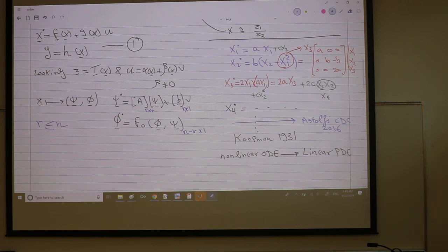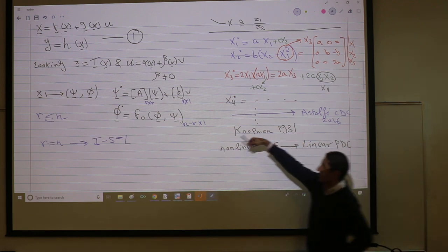So this is r-dimensional, r by one. Obviously r is less than or equal to n. And here is the remaining dynamics, n minus r times one. So in this sense, if r equals n, it's as if we get what? If r equals n, what do we get? Linearization. Yeah, right, so this is what we had in the last lecture, which is input state linearization. So r equals n, this is input state linearization. You linearize the entire system. So this is our goal today.